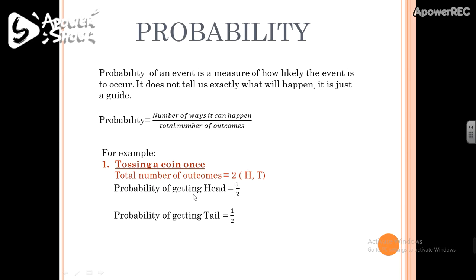So the probability of getting a head equals 1/2. Similarly, the number of ways of getting a tail is also 1, so the probability of getting a tail also equals 1/2, where 1 is the number of ways of getting a tail and 2 is the total number of outcomes.